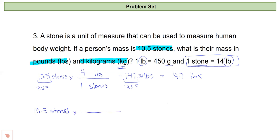So if I have 10.5 stones, I am going to need to convert into units of kilograms. So immediately I would put my units I want to be in on the top and the units I want to get rid of on the bottom, and look for a conversion factor between stones and kilograms, which I don't have.